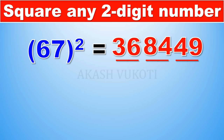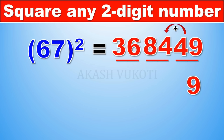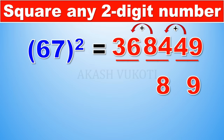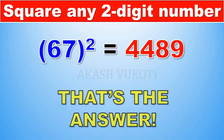Now we calculate the answer. Starting with 49 — it has two digits, so we keep the 9 and carry the 4. Next, 84 plus the carried 4 is 88 — keep the units 8 and carry the 8. Then 36 plus the carried 8 is 44, which goes at the beginning. Therefore 67 squared equals 4489.